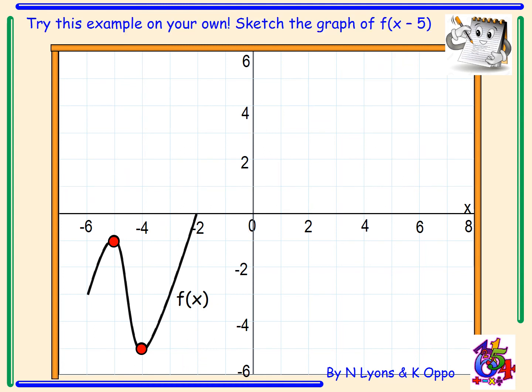Now try this example on your own. Sketch the graph of f(x - 5). Please pause the video. And the answer: if it's f(x - 5), we move the graph to the right five places. Our new coordinates are (0, -1) and (1, -5).